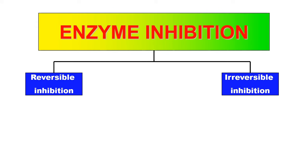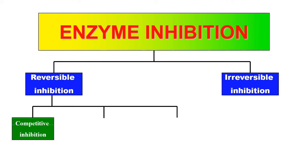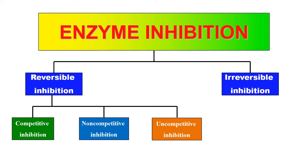Inhibitors are divided into two broad categories: reversible inhibition and irreversible inhibition. Reversible inhibition is the type where inhibition can be reverted back — once the inhibitor is removed from the enzyme, the enzyme returns to its normal working. In irreversible inhibition, the enzyme is permanently inhibited or permanently damaged. Reversible inhibitors are further of the following types: competitive inhibition, non-competitive inhibition, and uncompetitive inhibition.